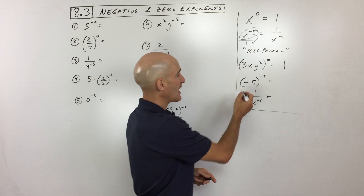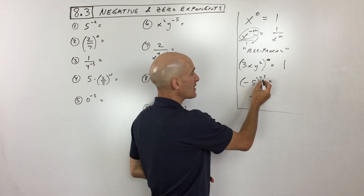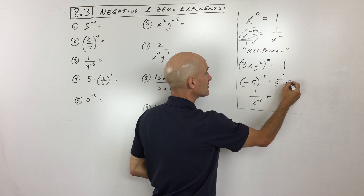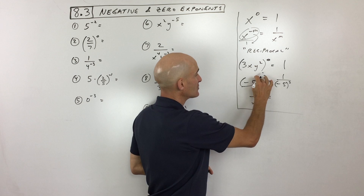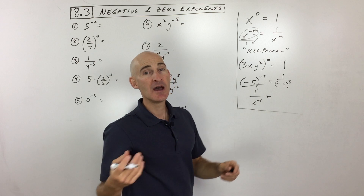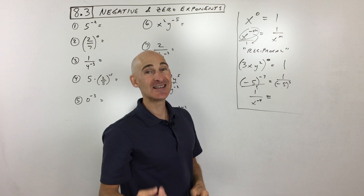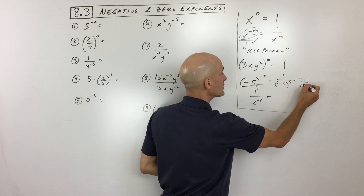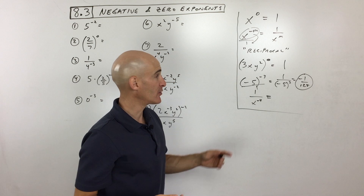Now this one: negative 5 to the negative 3rd power. This negative exponent tells us this is going to be 1 over negative 5 to the positive 3 — all I did was move it to the other side of the fraction bar and changed the exponent from negative 3 to positive 3. Negative 5 times negative 5 times negative 5 is negative 125, so this equals negative 1/125.